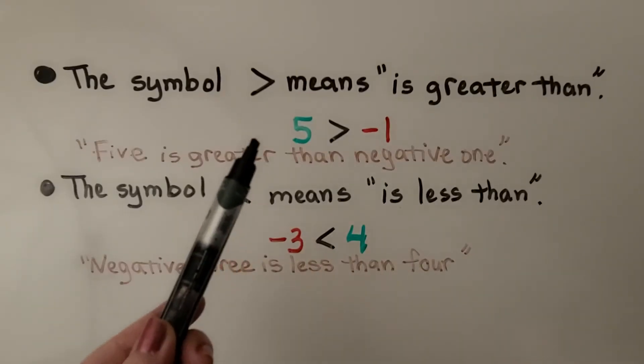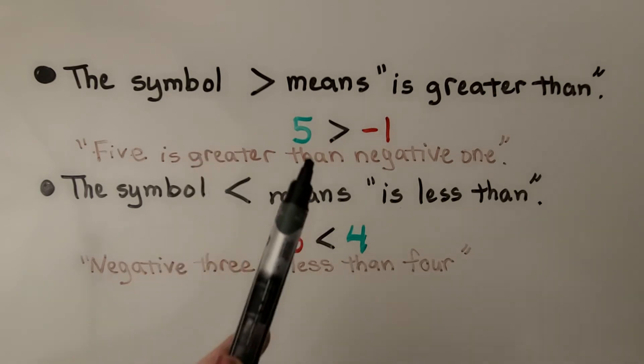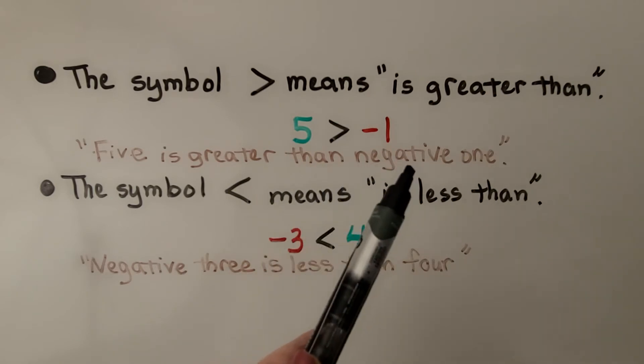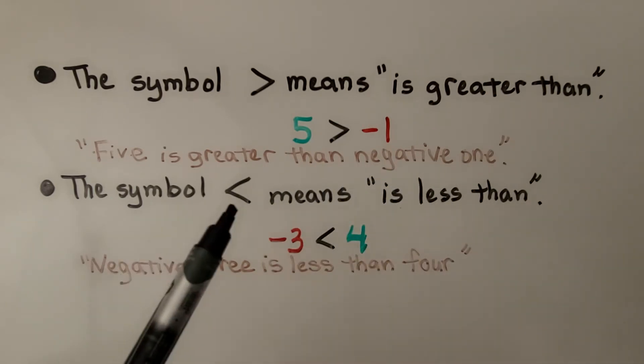So this symbol means is greater than. We would read this inequality as 5 is greater than negative 1. And this symbol means is less than. We would read this inequality as negative 3 is less than 4.